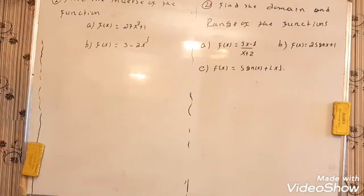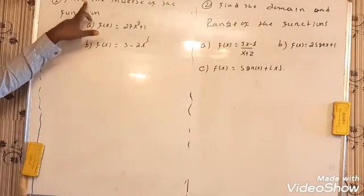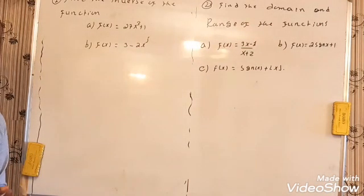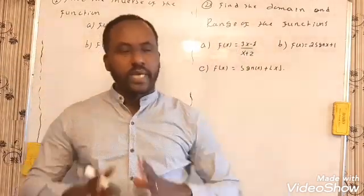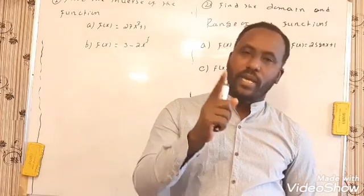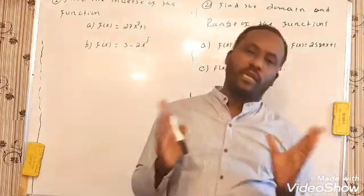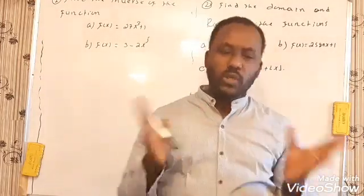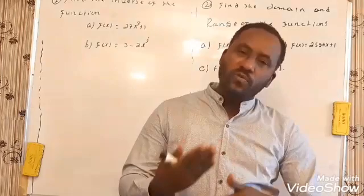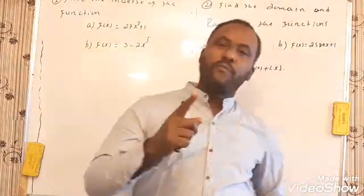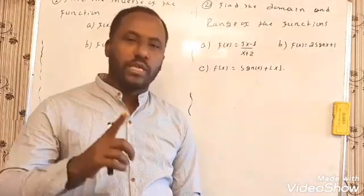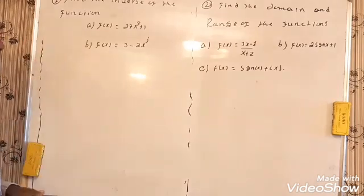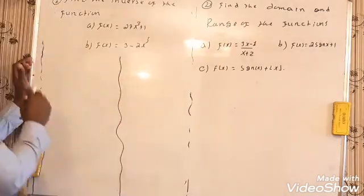In order to determine the solution of each problem, first of all, on the first problem it says: find the inverse of the following functions. The inverse of the function exists — a function f is invertible if and only if the function is absolutely one-to-one. So these two functions are absolutely one-to-one, so let's try directly the inverse of this problem.